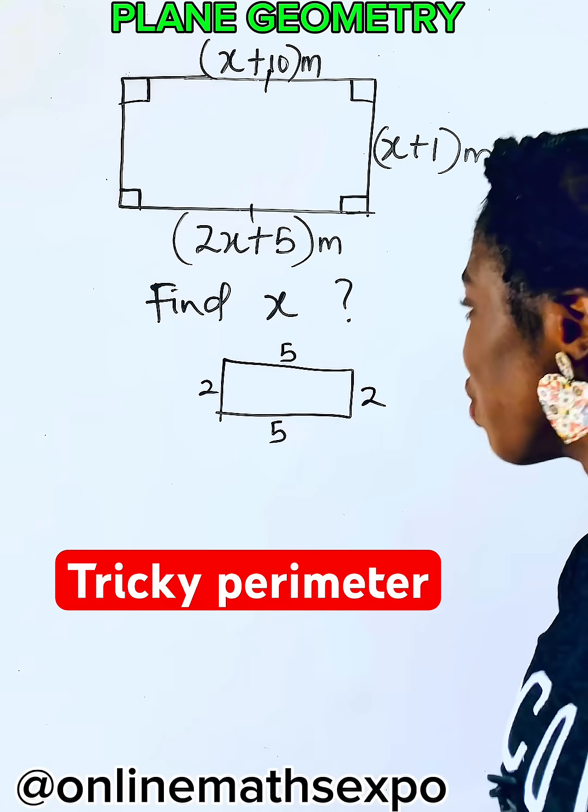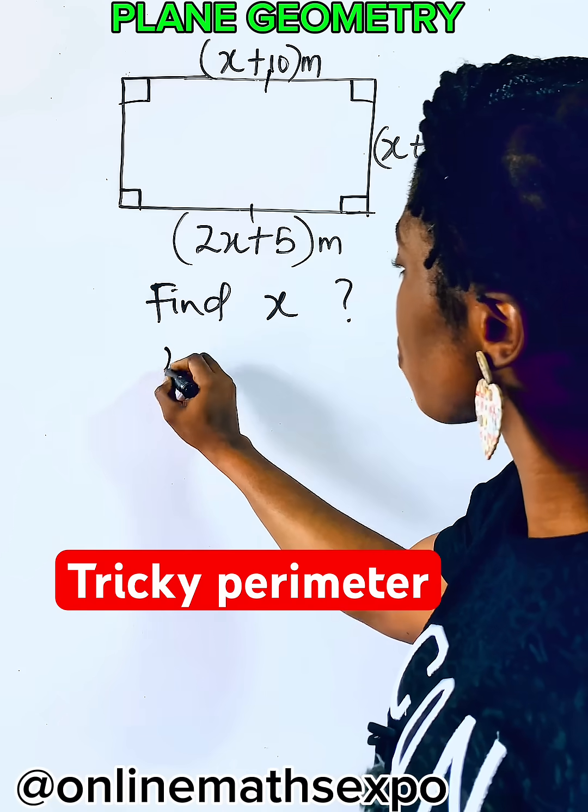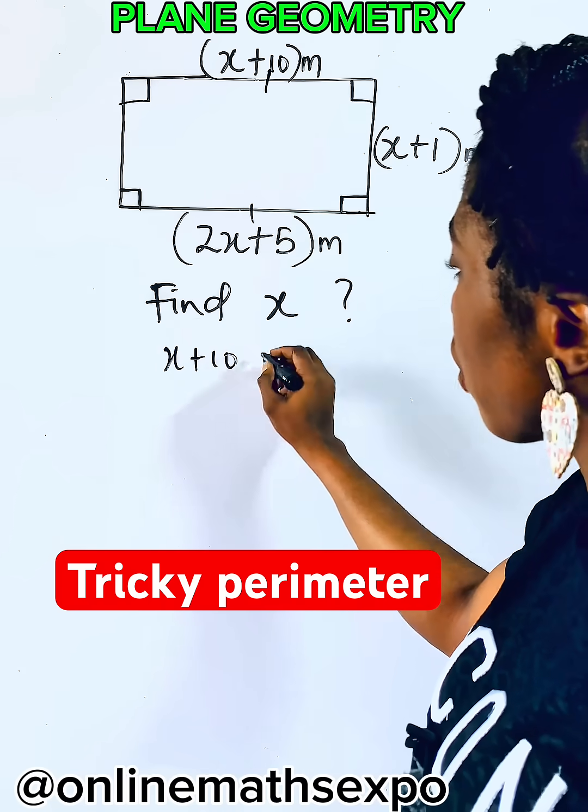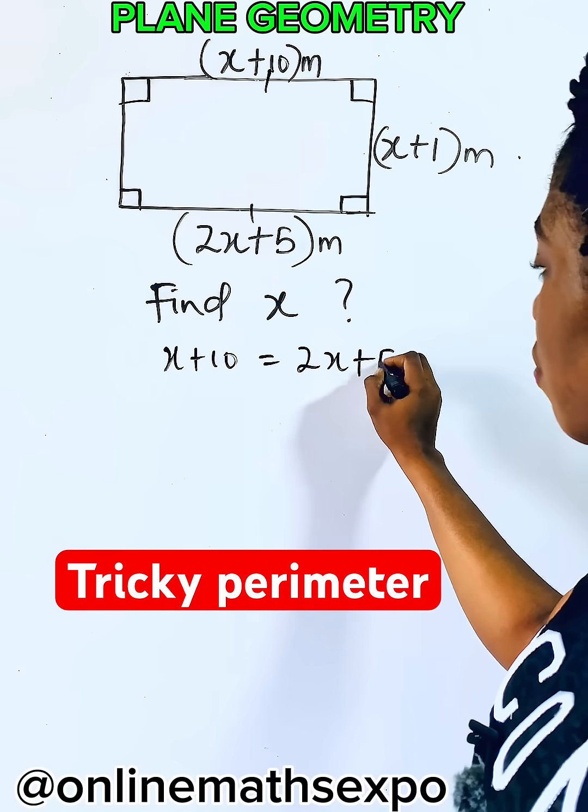And if that is true, we are going to have x plus 10 should be equal to 2x plus 5.